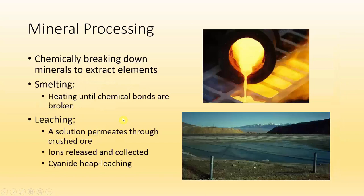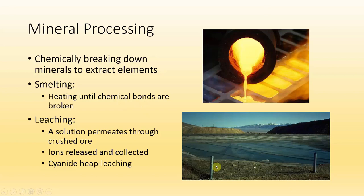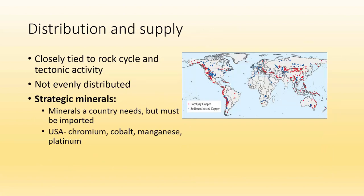Once you get material out of the ground, you need to extract the element or mineral you're looking for. One method is smelting — you heat the material until chemical bonds are broken, then chemically separate and extract the target element like gold. Another commonly used method is cyanide heap leaching — you take the ore, crush it fine, put it in a pit, and spray the whole thing with cyanide, which leaches out the target elements. There are obvious potential environmental issues with giant pits of cyanide just sitting around.